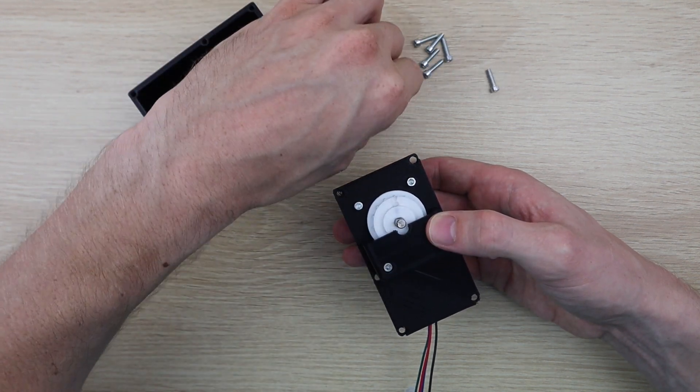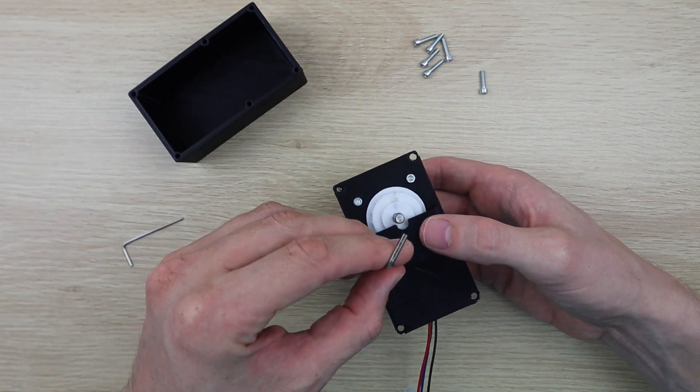Next, put the gear cover on and use two M3 by 15mm screws through to the motor to hold it in place.